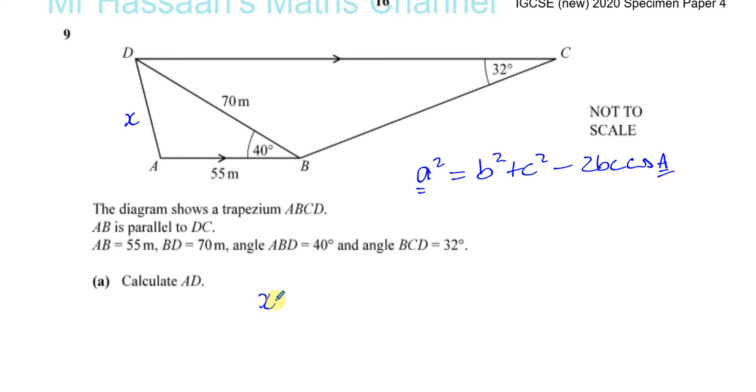So what we can do is we can say x equals, as long as you have this written down. They want to see the formula applied. So I'm going to write it as all under the square root. And you're going to have b squared, which is either 55 or 70. I'll just put 55. 55 squared plus 70 squared minus, and then you've got 2 times 55 times 70 times the cosine of the angle between them, which is 40 degrees.